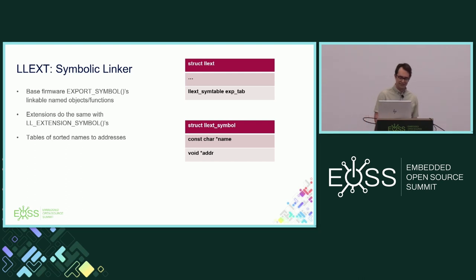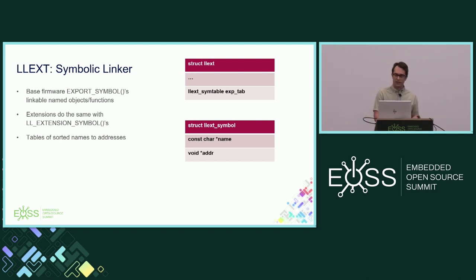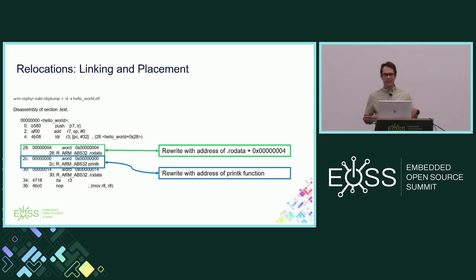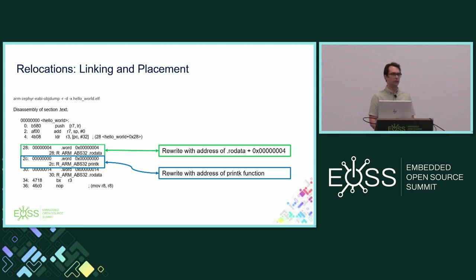What else is LLEXT? It's also a symbolic linker, and this is key to making everything work. The base firmware uses a macro called export_symbol — very similar to the Linux version — which creates a section in your linker script with a sorted array of names and address pairs. Extensions can do the same thing with a slightly different macro: llext_extension_symbol. Why do we need all of this? We have to manage memory and keep a mapping of names to addresses — and really, this all comes down to simply getting to hello world, because ELFs have relocations.